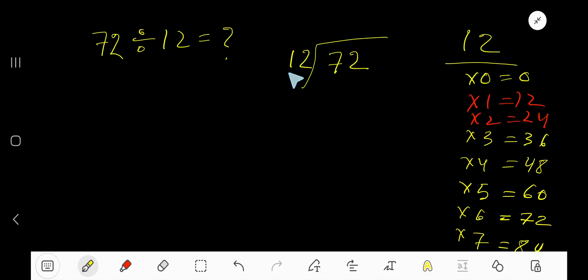72 divided by 12. Here 12 is the divisor, so we need the multiplication table of 12. 12 times 0 is 0, 12 times 1 is 12, 12 times 2 is 24, 12 times 3 is 36, 12 times 4 is 48, 12 times 5 is 60.